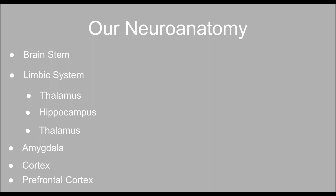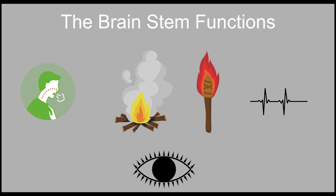Our brain is comprised of the brainstem, limbic system, amygdala, cortex, and prefrontal cortex. Over the next few slides, I will be sharing an explanation and examples of each section of the brain. Our brains develop from the bottom to the top and from the inside out.